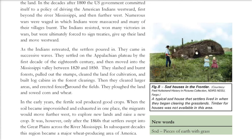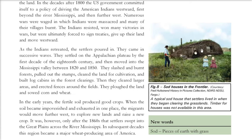The settlers burned, slashed, and cut the forest and pulled out the stumps to clear land for cultivation. Forests were being cleared and large areas fenced off. They were now sowing corn and wheat. This is a sod house on the frontier — a house made of mud and grass, with pieces of earth and grass used as building material by the white settlers.